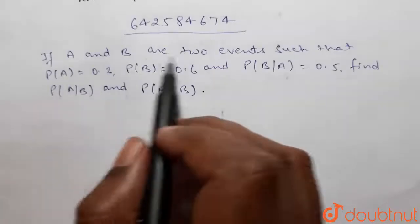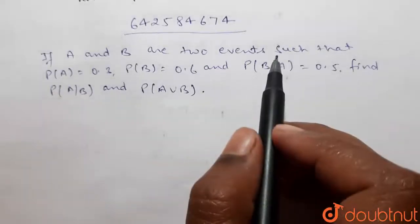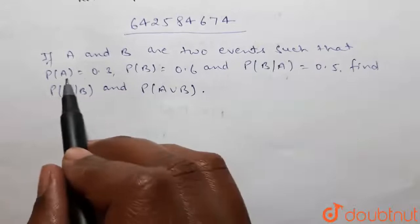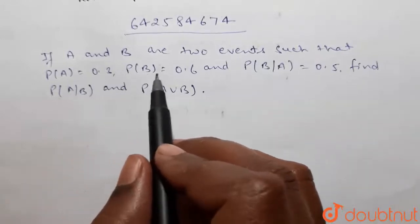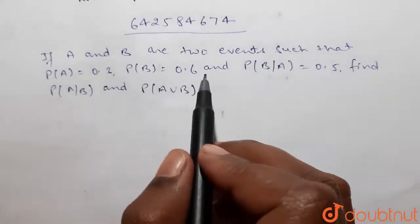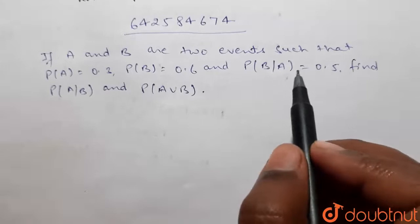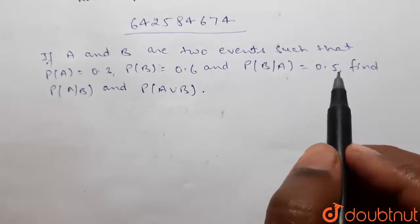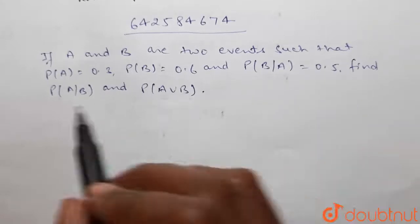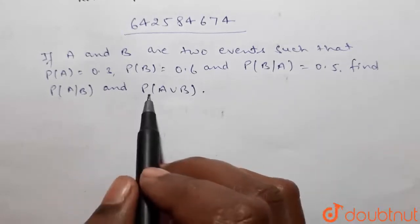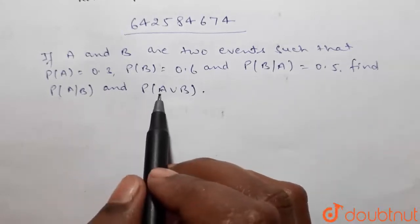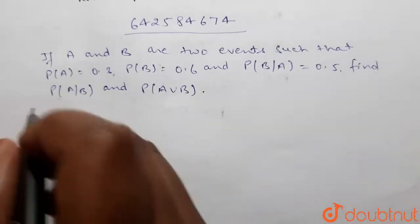If A and B are two events such that P(A) equals 0.3, P(B) equals 0.6 and P(B|A) equals 0.5, find P(A|B) and P(A∪B).